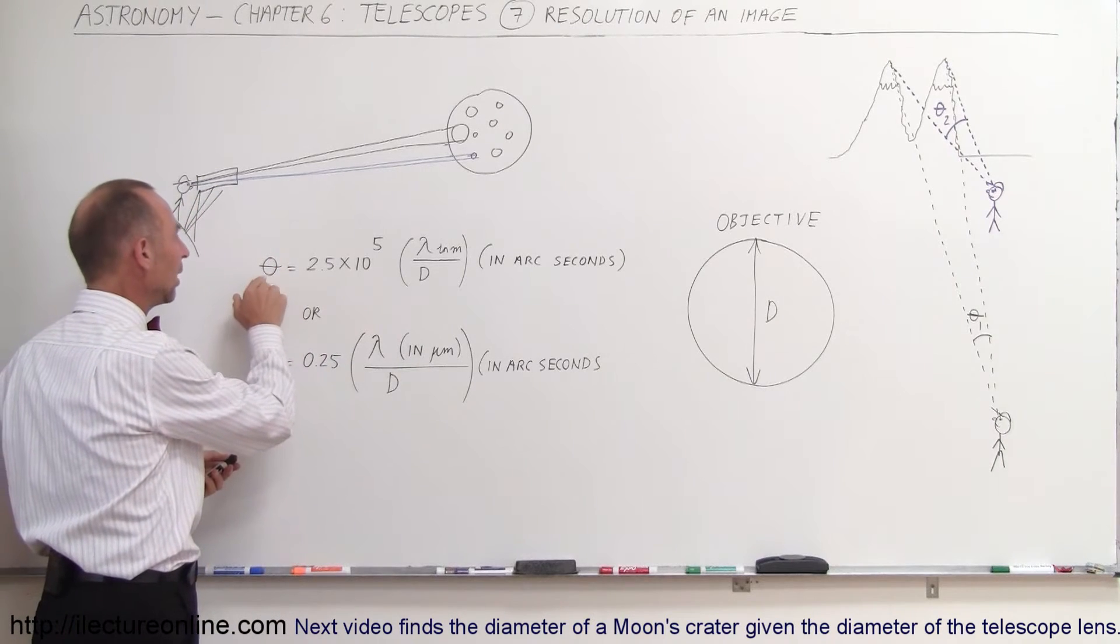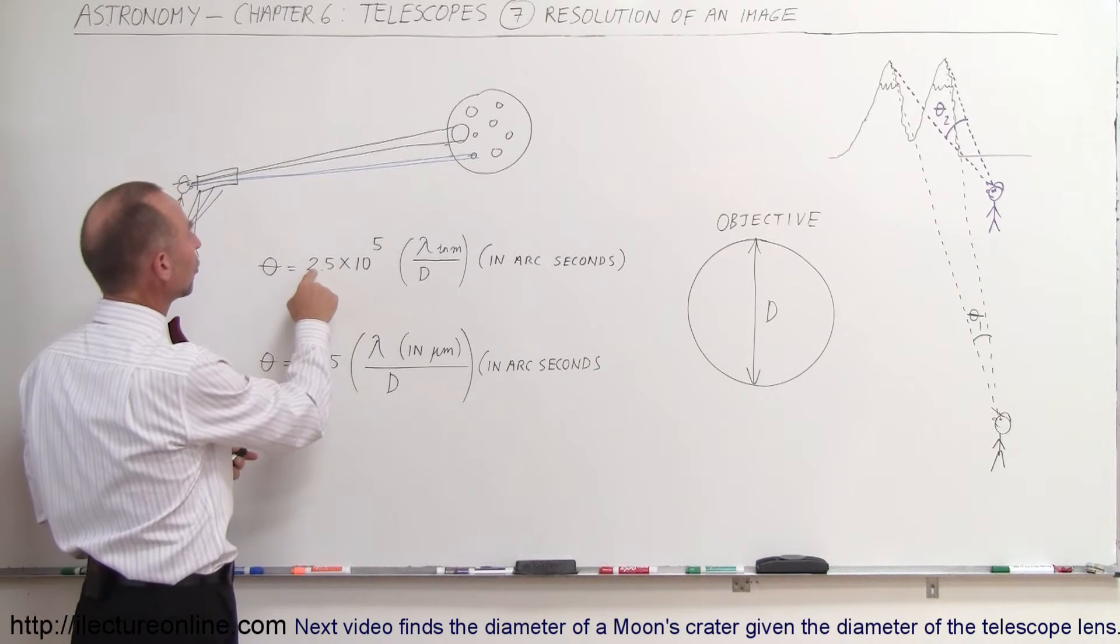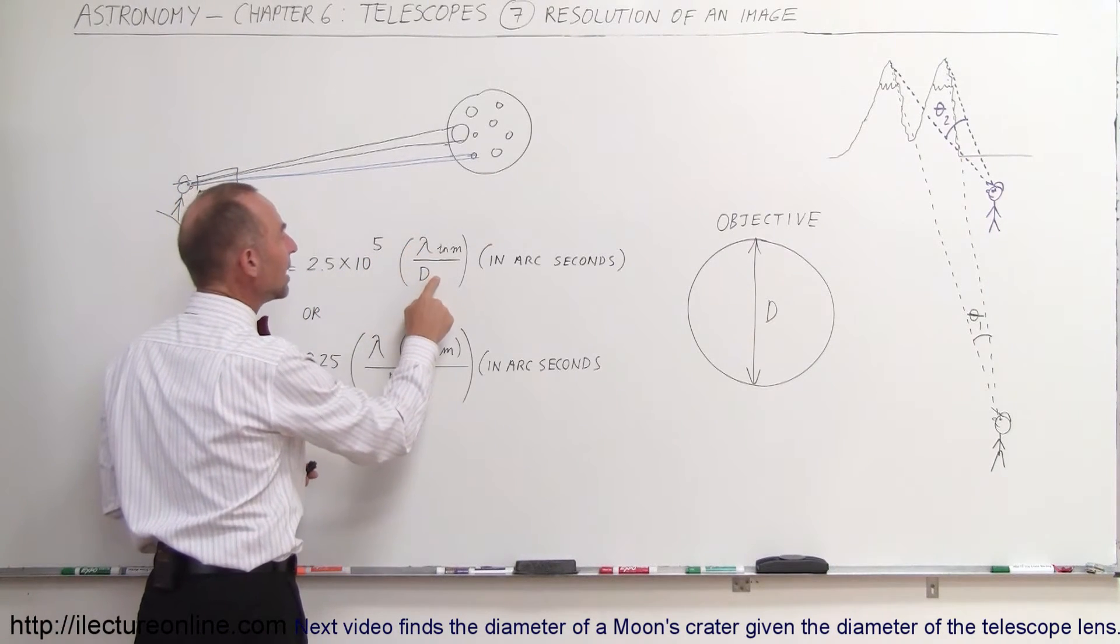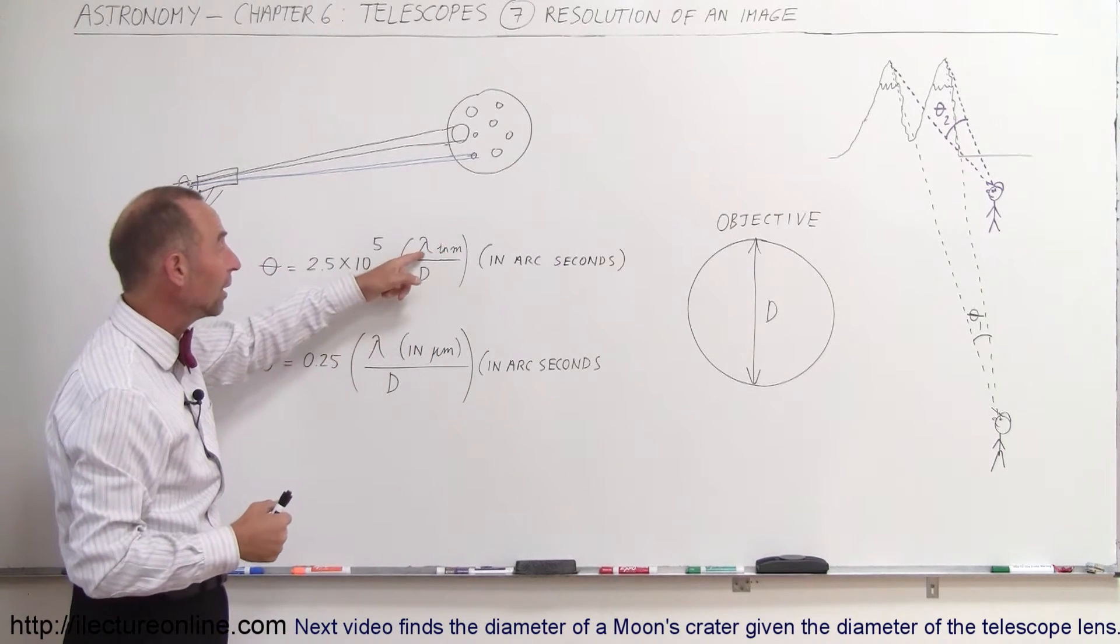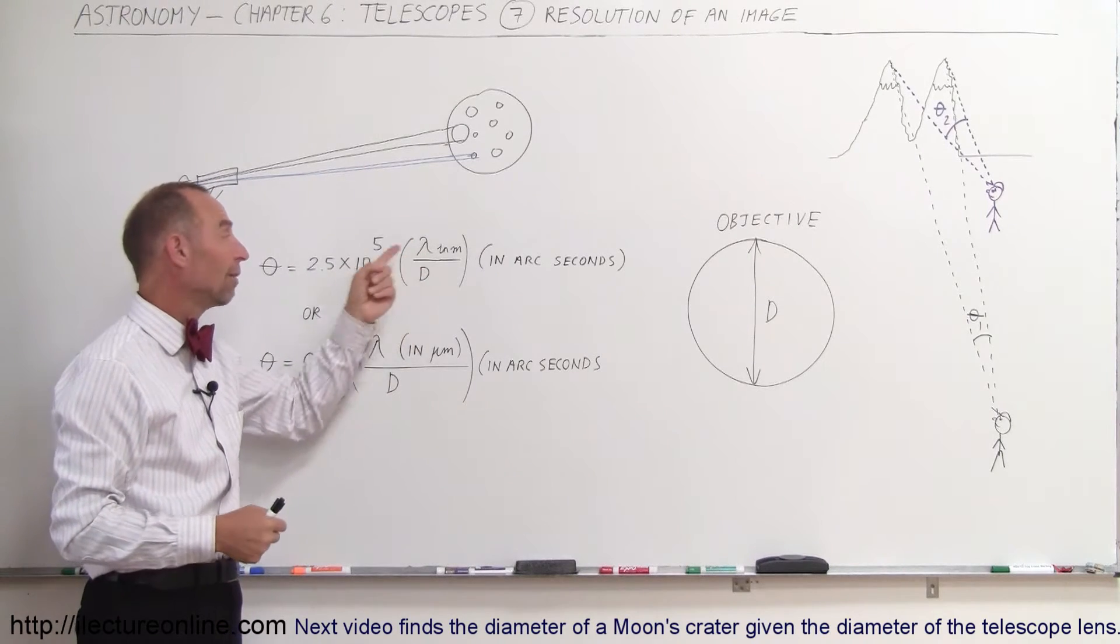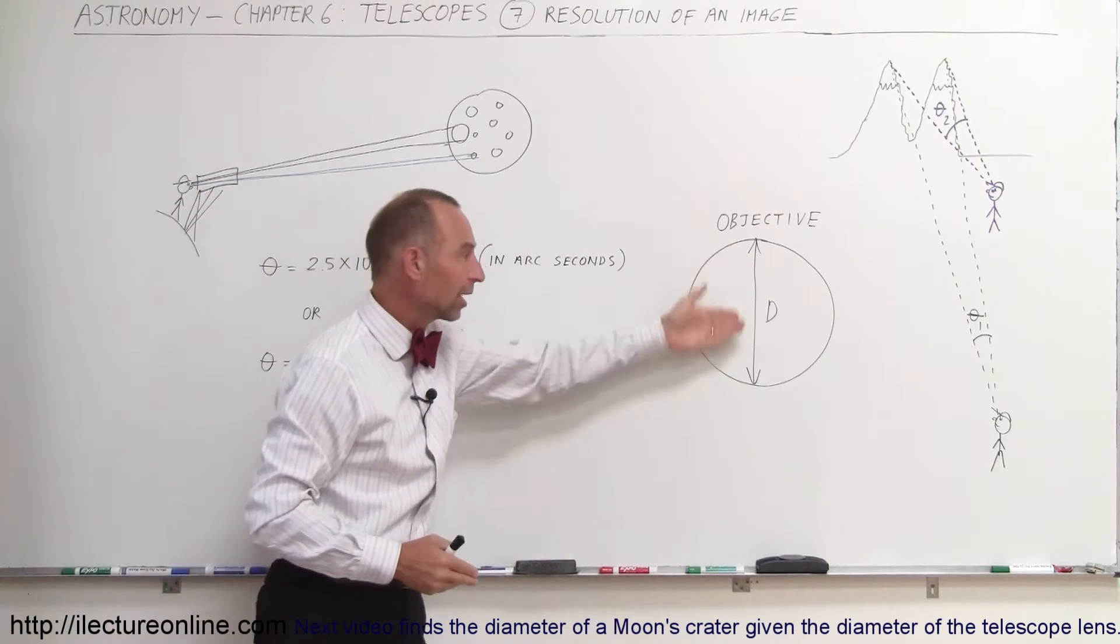And here's the angle of resolution. Theta, we'll just use any Greek symbol. Theta is a common one, is equal to 2.5 times 10 to the fifth, lambda divided by D. Lambda would be meters, meaning the wavelength in which you're observing the object. In this case, we're talking about visible light, so this would be the wavelength of visible light. And D is the diameter of the objective.